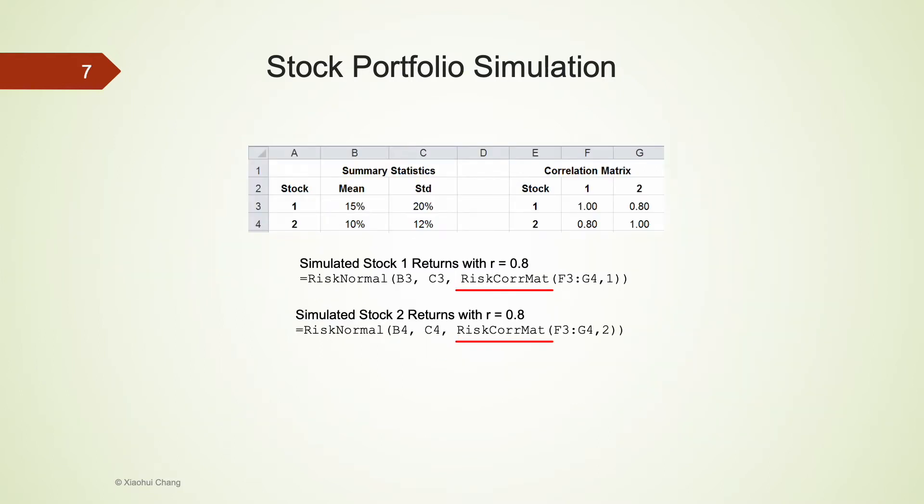This can be accomplished using a risk-call-mat function, which can be added into our standard risk-normal function as its third argument. The risk-call-mat function itself has two arguments. The first argument specifies the location of the correlation matrix. In this example, the correlation matrix is located from cell F3 to cell G4. The second argument indicates which column of the correlation matrix should be used.